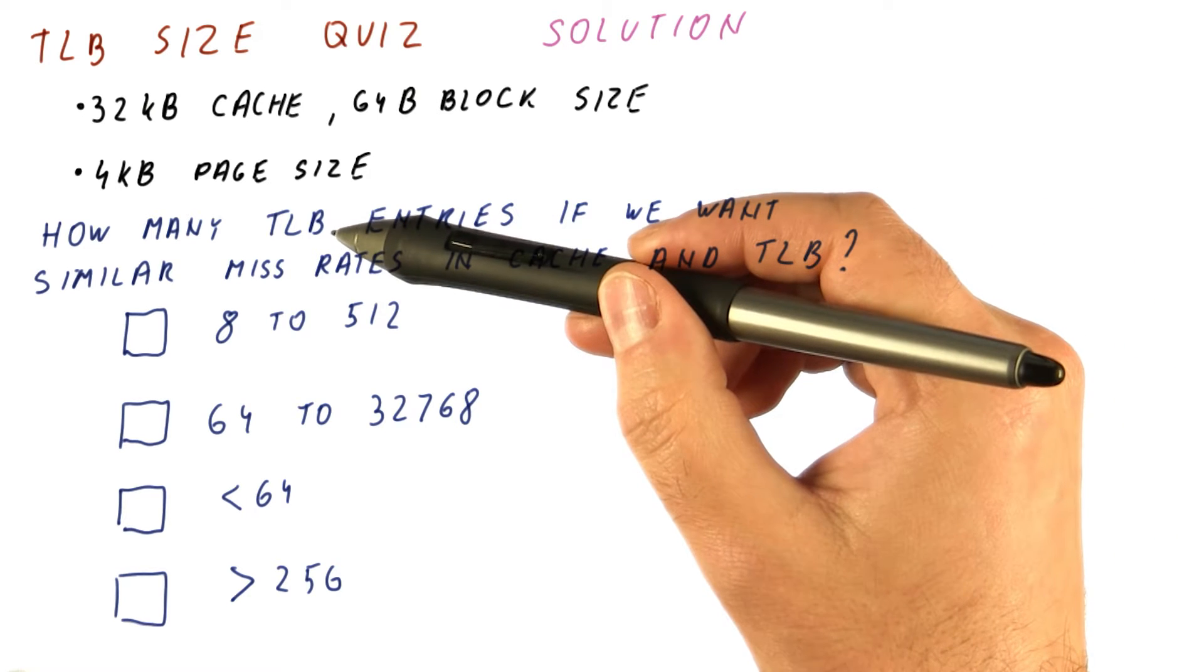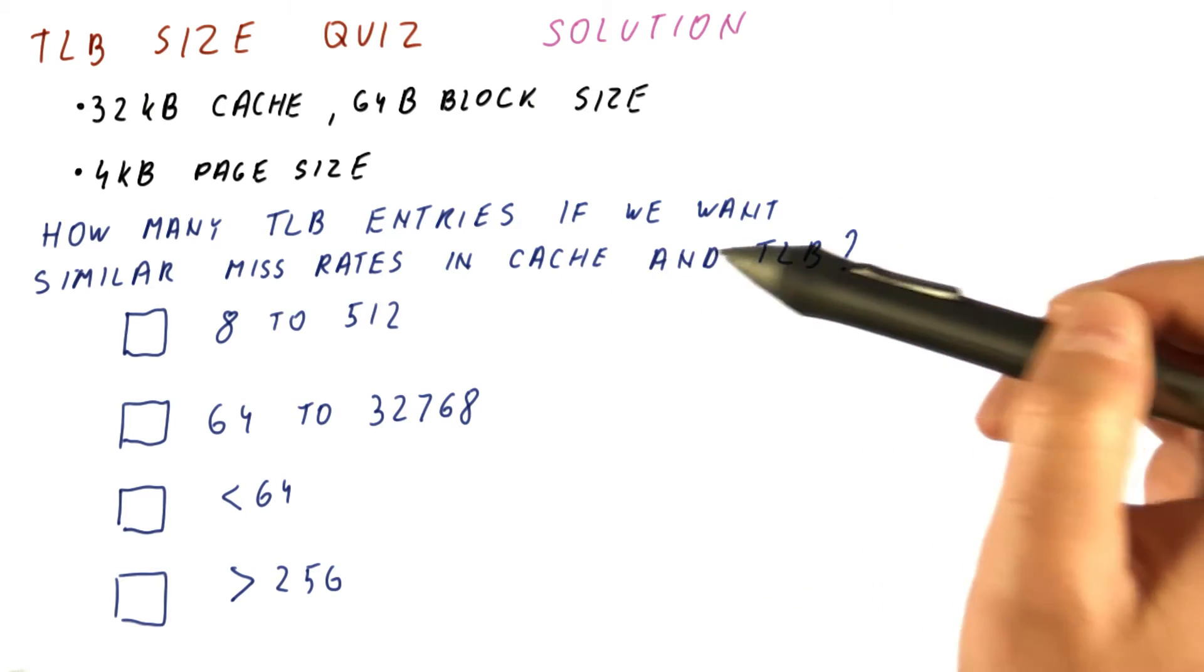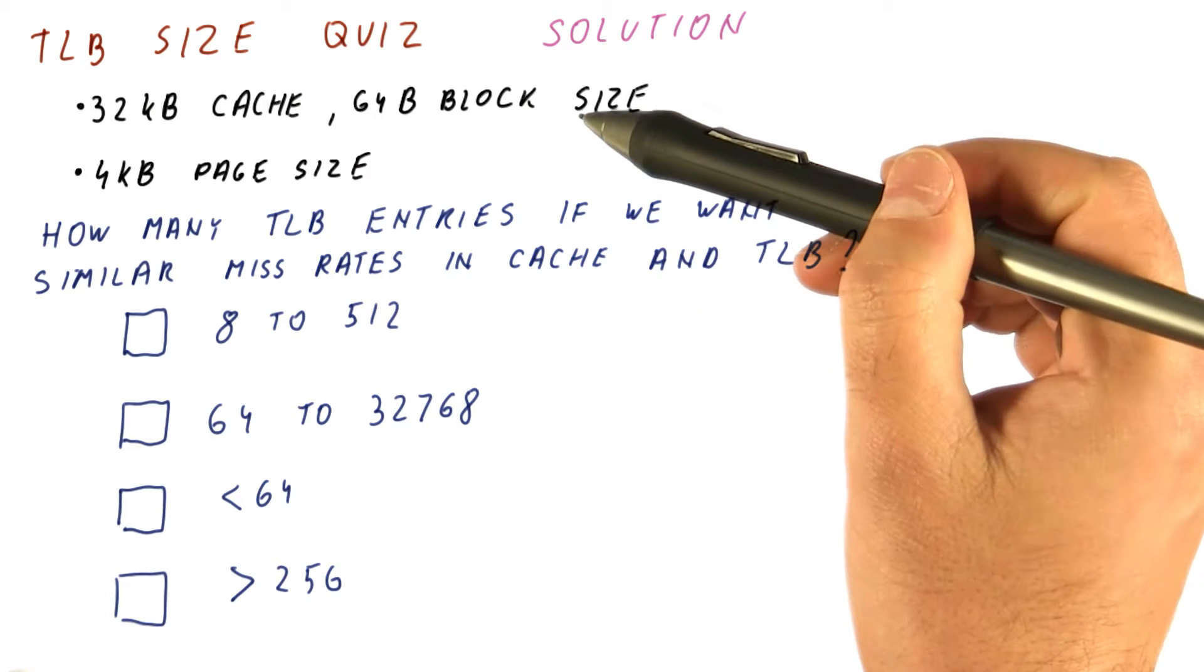So the question is how many TLB entries do we need to have a similar hit rate and miss rate to our cache?